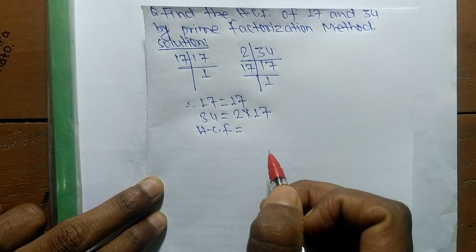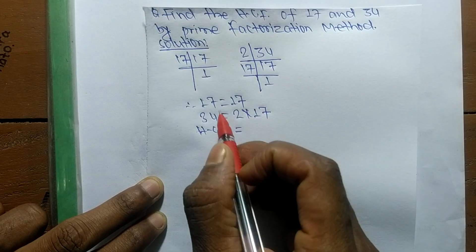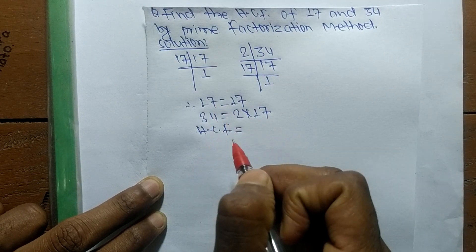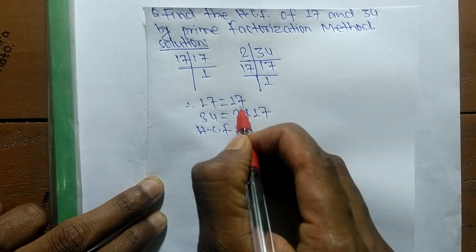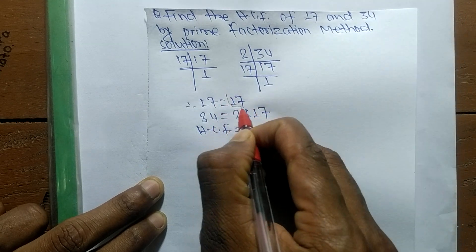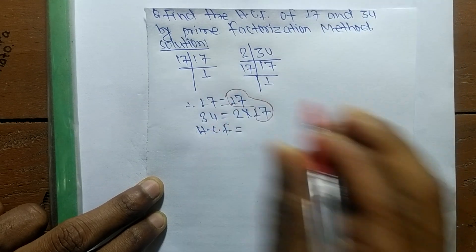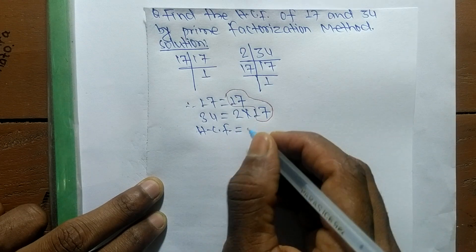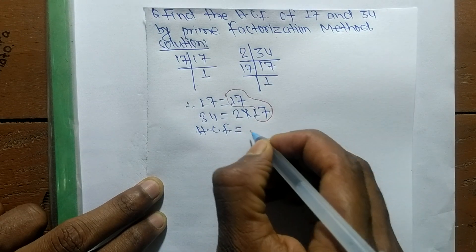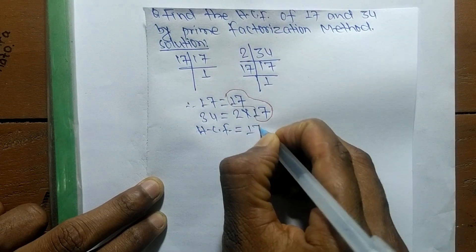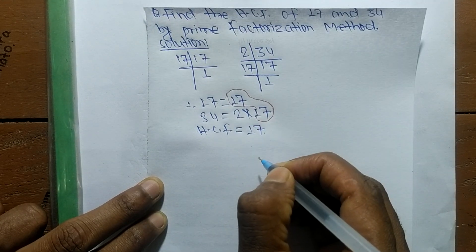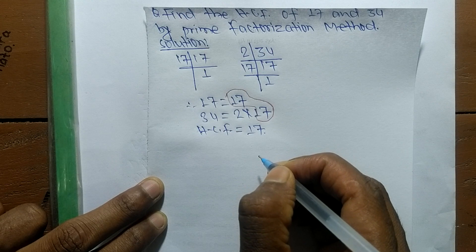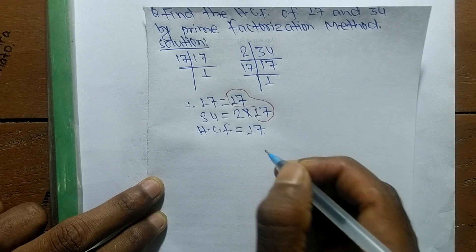We find the common factors in the prime factors of 17 and 34. The common factor here is 17, so the HCF is equal to 17. That's it for today — thanks for watching.